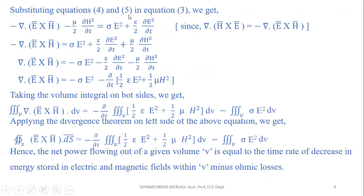Substituting equations 4 and 5 into equation 3, we get: −∇ · (E̅ × H̅) − (μ/2) ∂H²/∂t = σ E² + (ε/2) ∂E²/∂t. Taking the (μ/2) ∂H²/∂t term to the right side gives: −∇ · (E̅ × H̅) = σ E² + (ε/2) ∂E²/∂t + (μ/2) ∂H²/∂t.